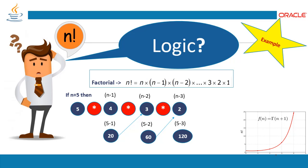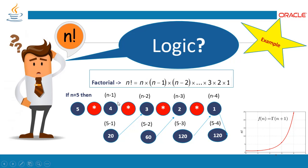The series keeps going until the condition reaches 1. So 60 is multiplied by n-3, which is 2, and then by n-4, which is 1. Once we reach 1, 120 multiplied by 1 equals 120. So factorial of 5 is 120 — that is n multiplied by n-1 multiplied by n-2 and so on down to 1.